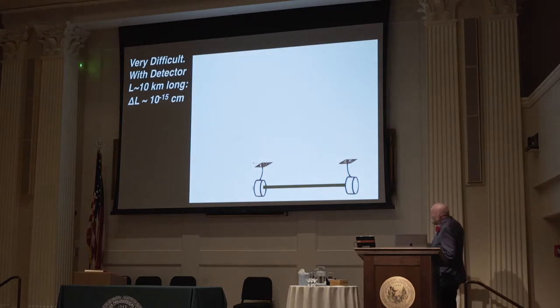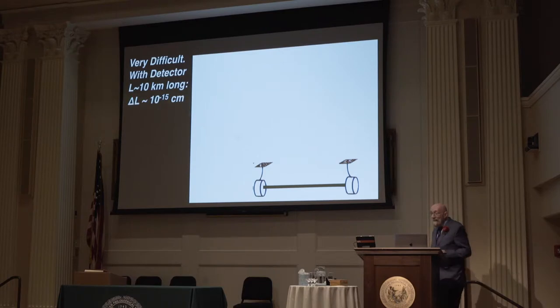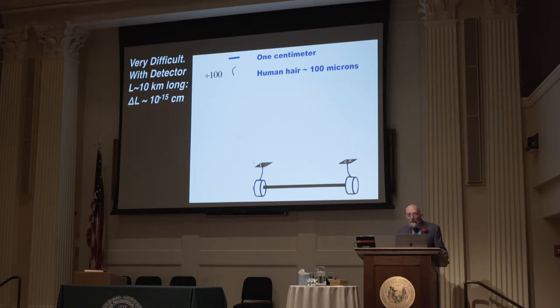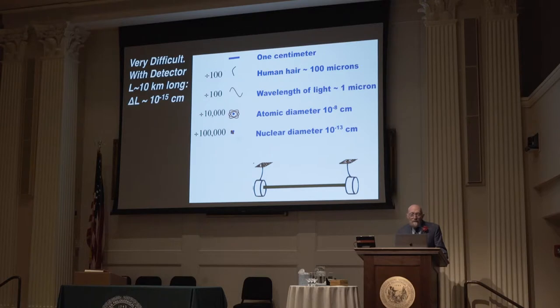I was skeptical. Let's look at some numbers. The prediction is that if you had mirrors separated by 10 kilometers, the motions between them would be 10 to the minus 15 centimeters. You begin with one centimeter, divide by 100 and you get the thickness of human hair, divide by 100 again and you get the wavelength of the light used — one micron, divide by 10,000 and you get the diameter of an atom, divide by 100,000 and you get the diameter of the nucleus of an atom, divide by 100 and you get the size of those motions. That was precisely my reaction.